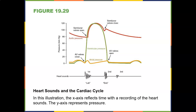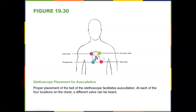Looking at heart sounds in the cardiac cycle: the AV valves close and the semilunar valves open, producing the first sound — the 'lub.' Then the AV valves close and the semilunar valves close, producing the second sound — the 'dub.' It's the closing of these valves that makes the lub-dub. Good auscultation sites include the AV valve, the tricuspid valve, the pulmonary valve, and the mitral valve.